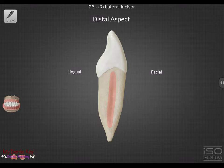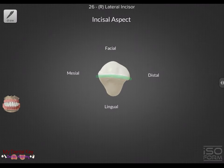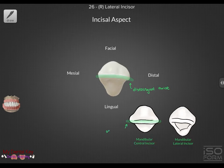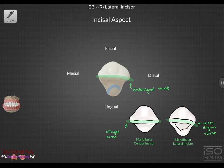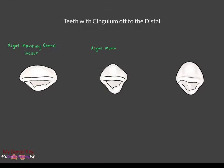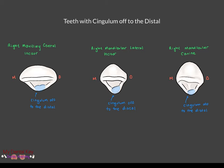Moving on to the distal, the distal aspect has a deeper root depression than the mesial aspect. From the incisal view, you can see the incisal edge slopes gingivally and there is a distal lingual twist on the incisal edge. This helps differentiate the lateral from the mandibular central. From this view, you can also see that the cingulum is slightly off-center to the distal. The other teeth in the oral cavity that have the cingulum to the distal are the maxillary central incisors and the mandibular canines.